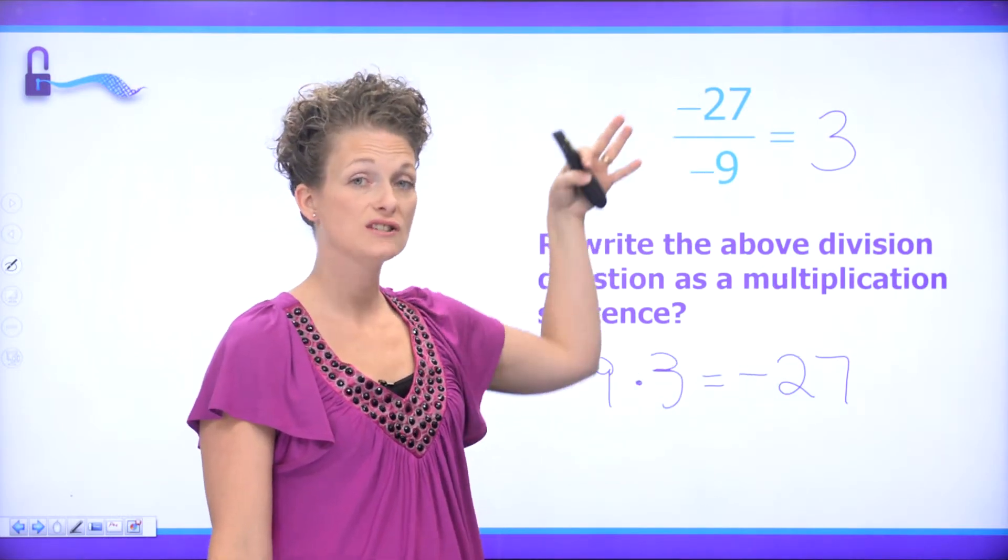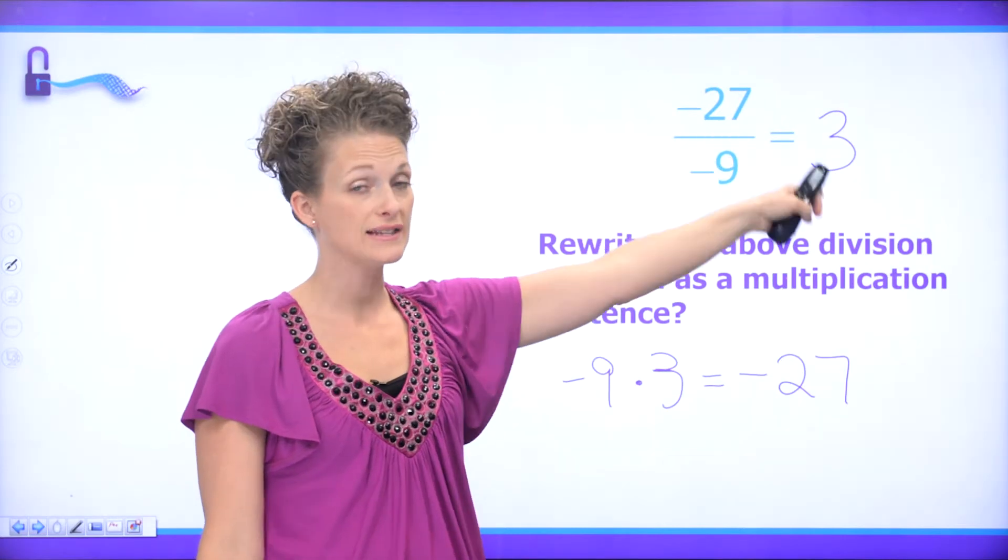So negative 27 divided by negative 9 has to be positive 3.